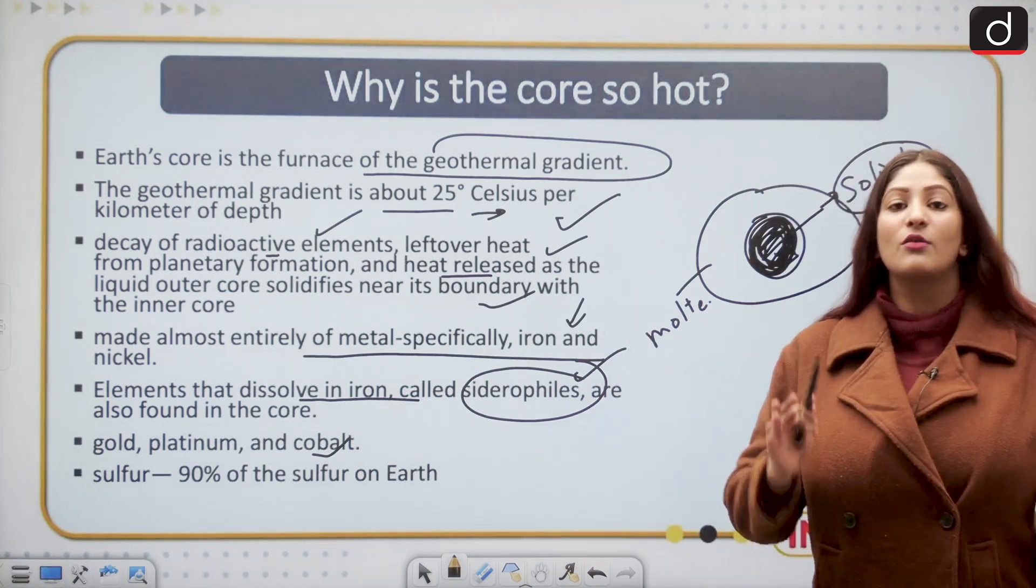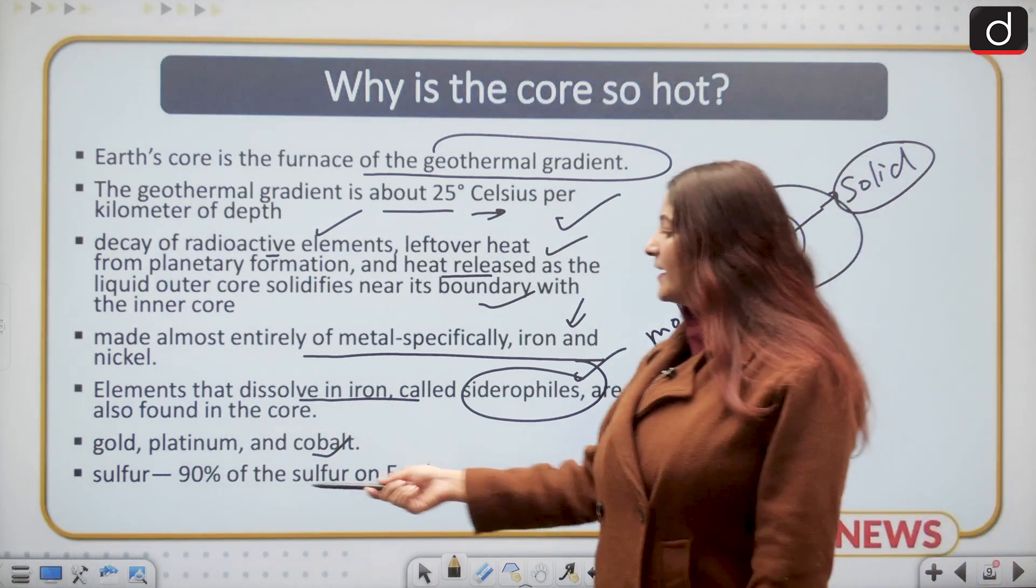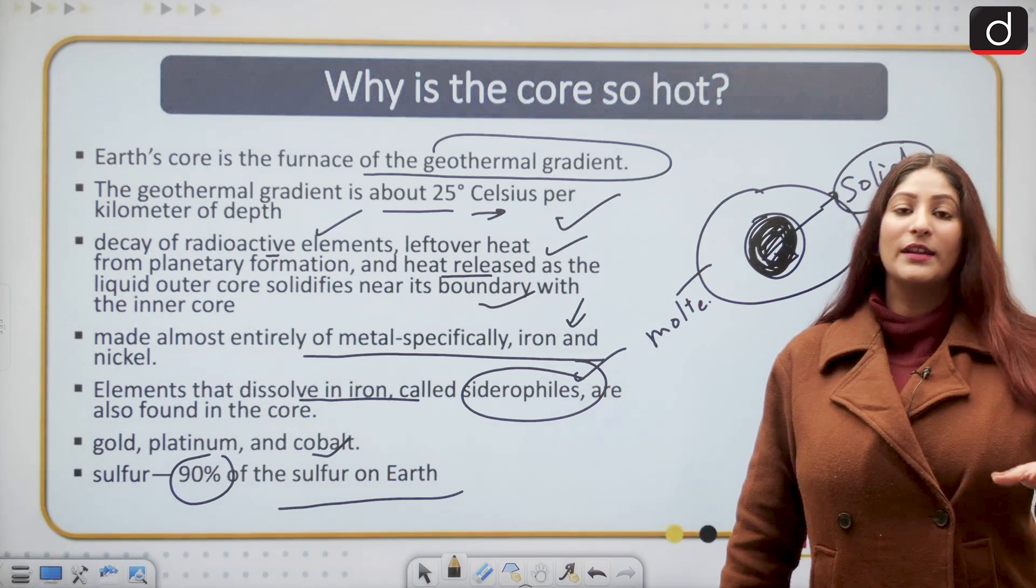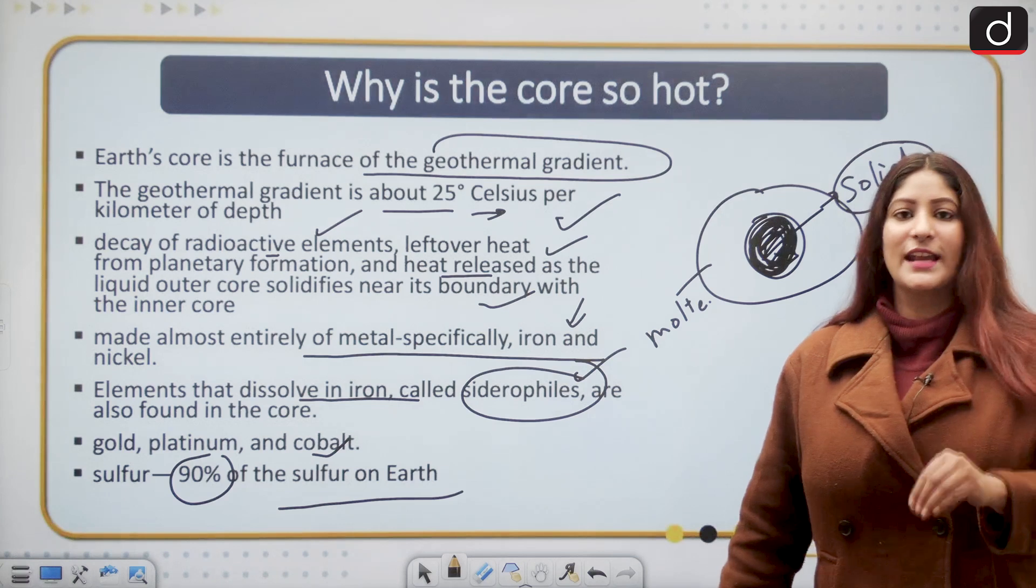Sulfur is also found in the core. Sulfur surprisingly makes up 90 percent of the sulfur on Earth and is found inside the core.